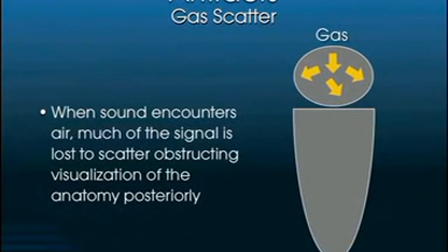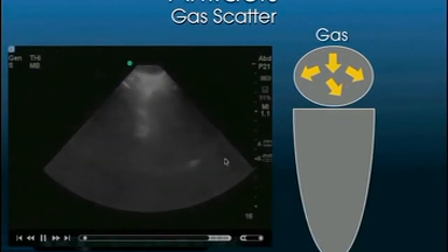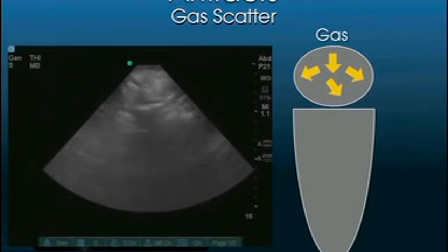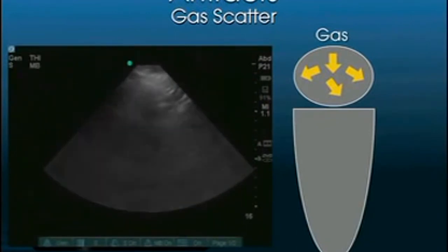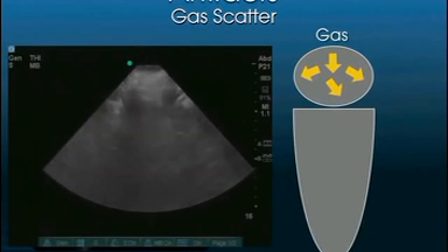Gas is the true enemy of ultrasound. When sound encounters gas, it gets scattered everywhere and you lose the ability to make any meaningful interpretation. When you can't make sense of an image, the answer is usually bowel gas. This happens frequently when scanning the aorta, and the solution is to push the probe with more force to displace loops of bowel and get around the bowel gas.